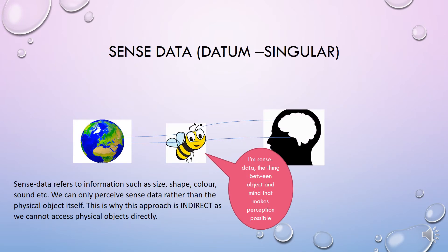We're talking a lot about sense data — the singular is sense datum — because it plays a key role for indirect realists in explaining how we perceive. It's the mediating point between the external world and our minds. Locke would call this 'ideas'; Russell calls this 'sense data,' which refers to information such as size, shape, colour, and sound. We can only perceive sense data rather than the physical object itself. We cannot access the physical object directly, which is why this approach is called indirect realism.